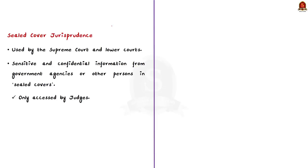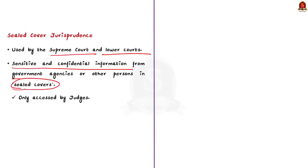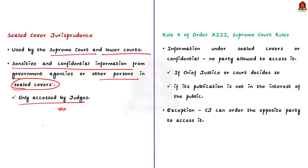Sealed cover jurisprudence is a practice used by the Supreme Court and sometimes by lower courts. Under this practice, courts may ask for and accept sensitive and confidential information in sealed covers from government agencies or other persons. Such sealed covers can be accessed only by the judges. The main fact to note is that the contents of these sealed covers in any court proceedings are inaccessible to the other parties in the case.